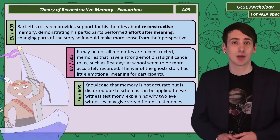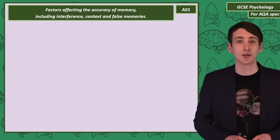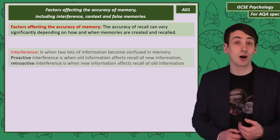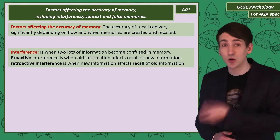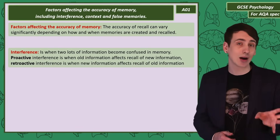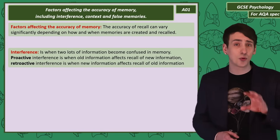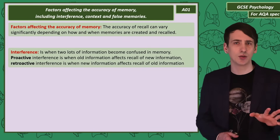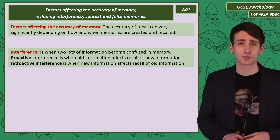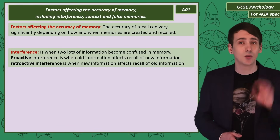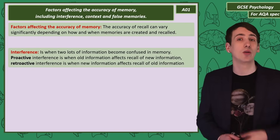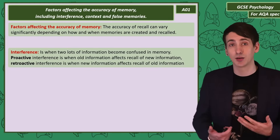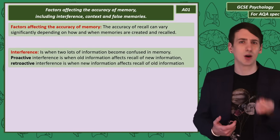Let's look at three factors thought to influence how correct your recall is: interference, context and false memories. When we say interference, we mean there are two memories and one is making the recall of the other more difficult. There are two types: proactive and retroactive. Proactive interference is when old information influences the recall of new information — say if you move house and you give your old postcode instead of your new one. The opposite is retroactive interference, when new information affects the recall of old information. For example, you had a bank card with a pin number, then you get a second bank card, but learning that new pin makes you struggle to remember the pin on your older card.